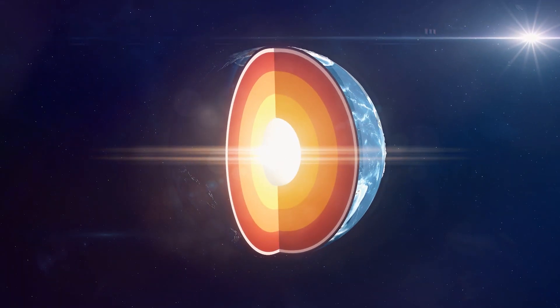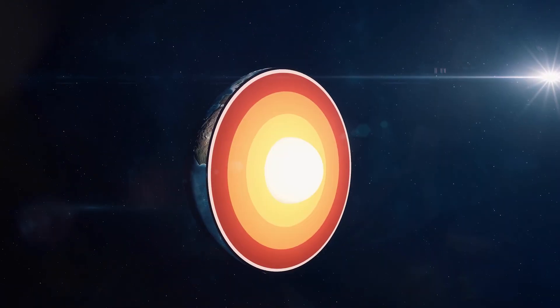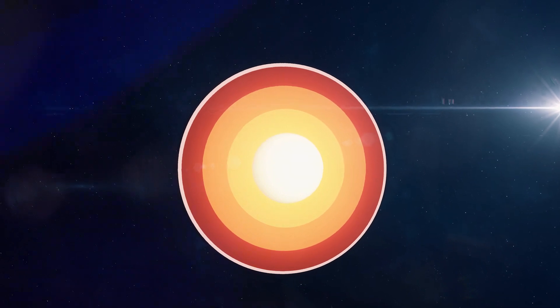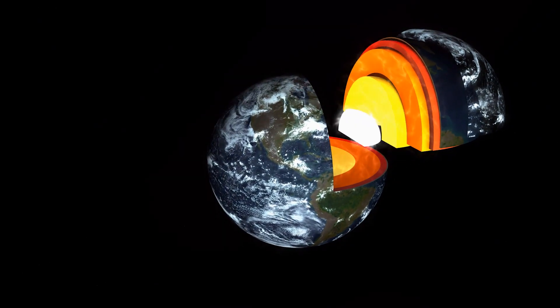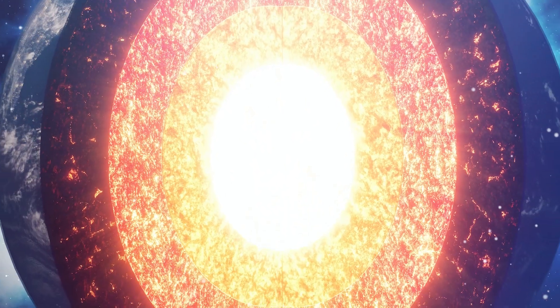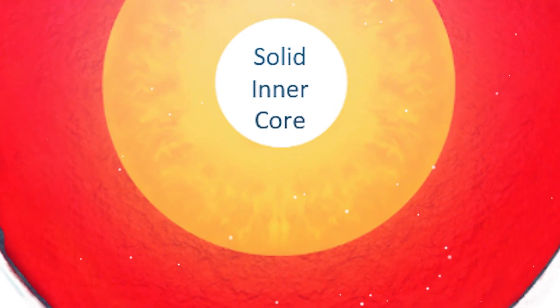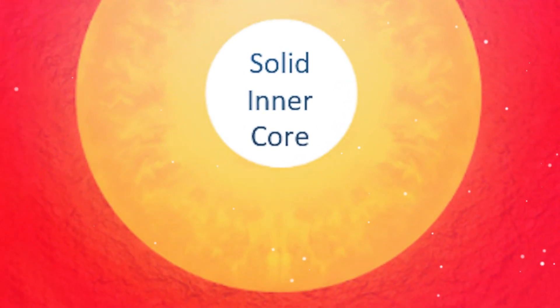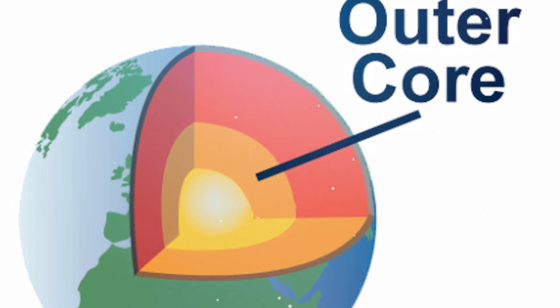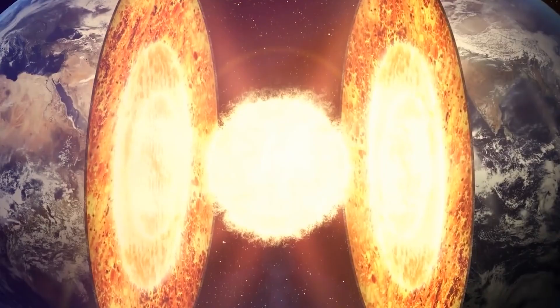Dive straight into the heart of the matter - the core. This is where things get intense, like the central powerhouse that keeps the earth ticking. The core is divided into two main parts: the outer core and the inner core. Picture it as the earth's own hot and solid duo. First up, the outer core. It's a bit like a boiling pot of liquid iron and nickel. It's scorching hot down there, but not quite enough to make things boil in the way you might imagine.